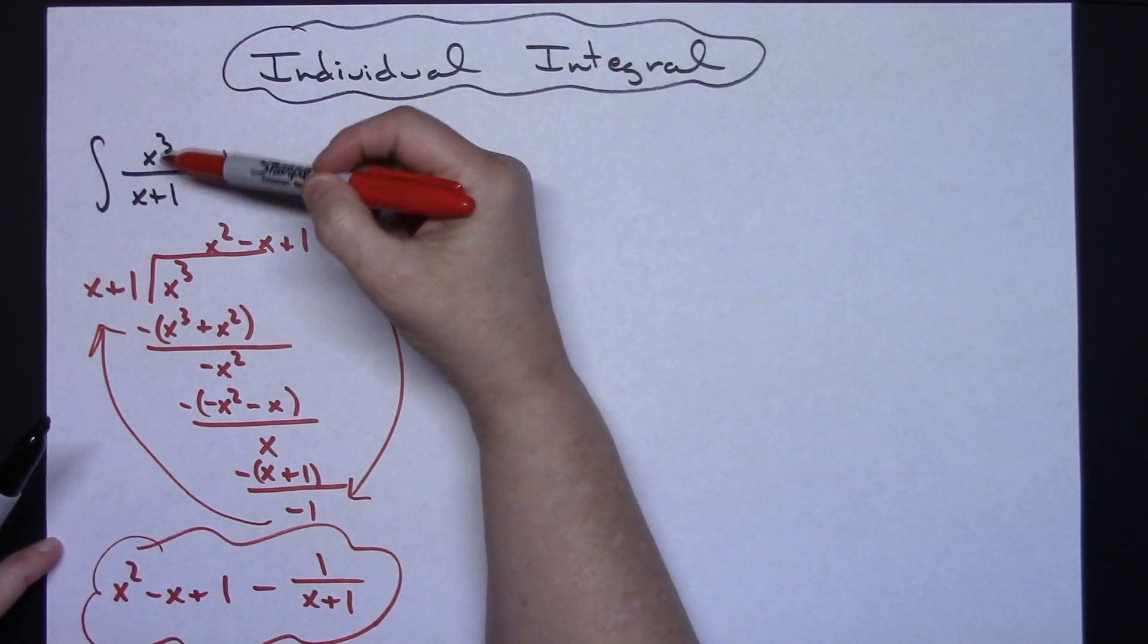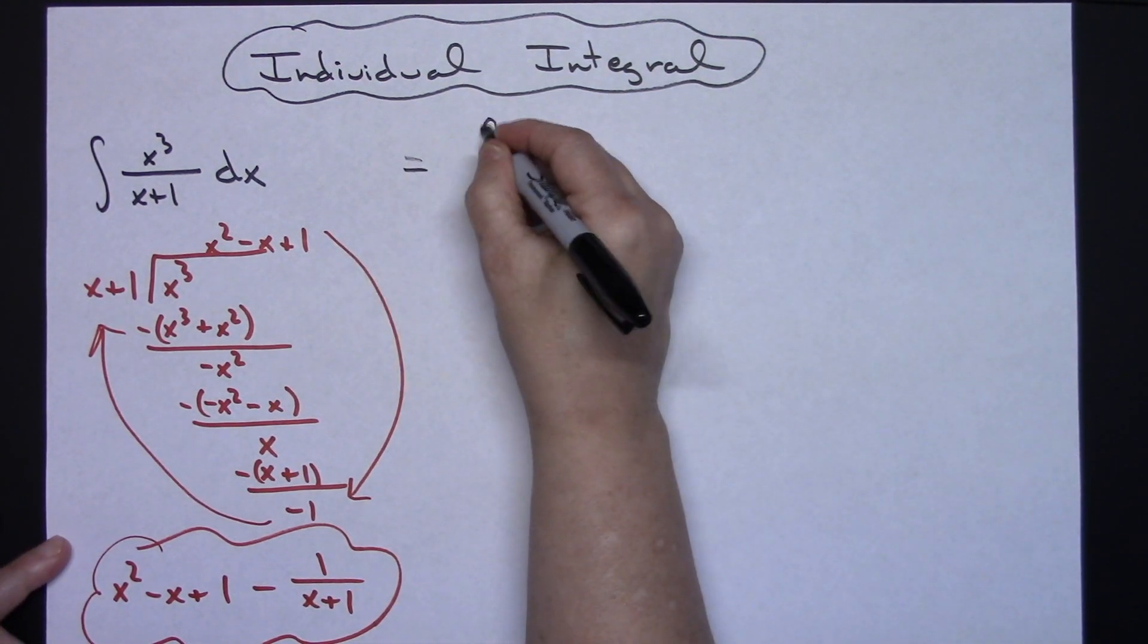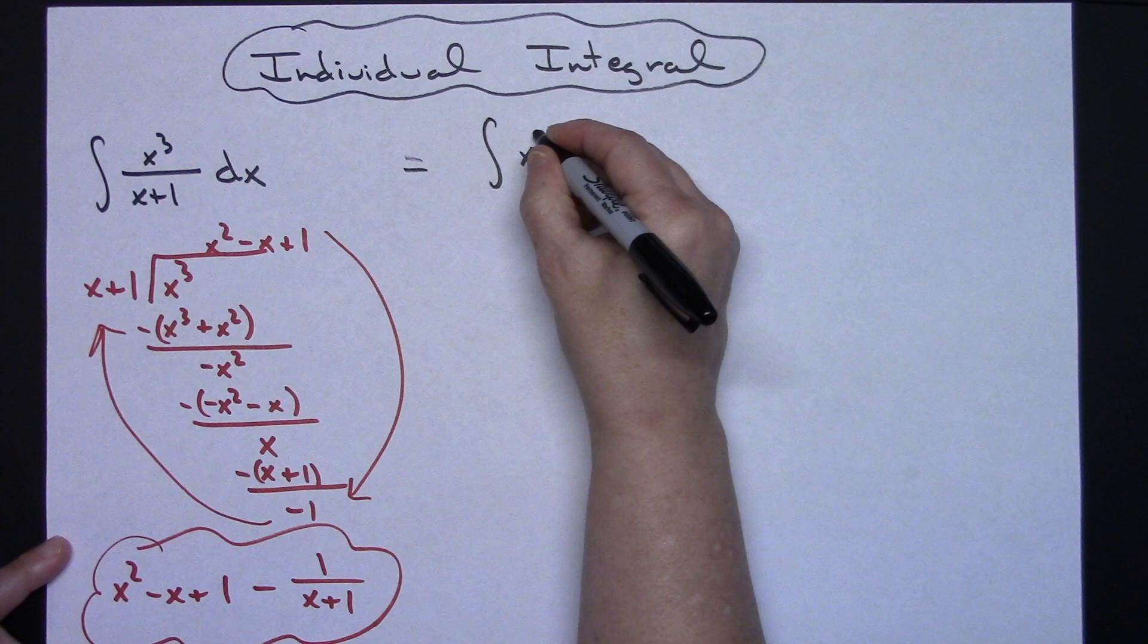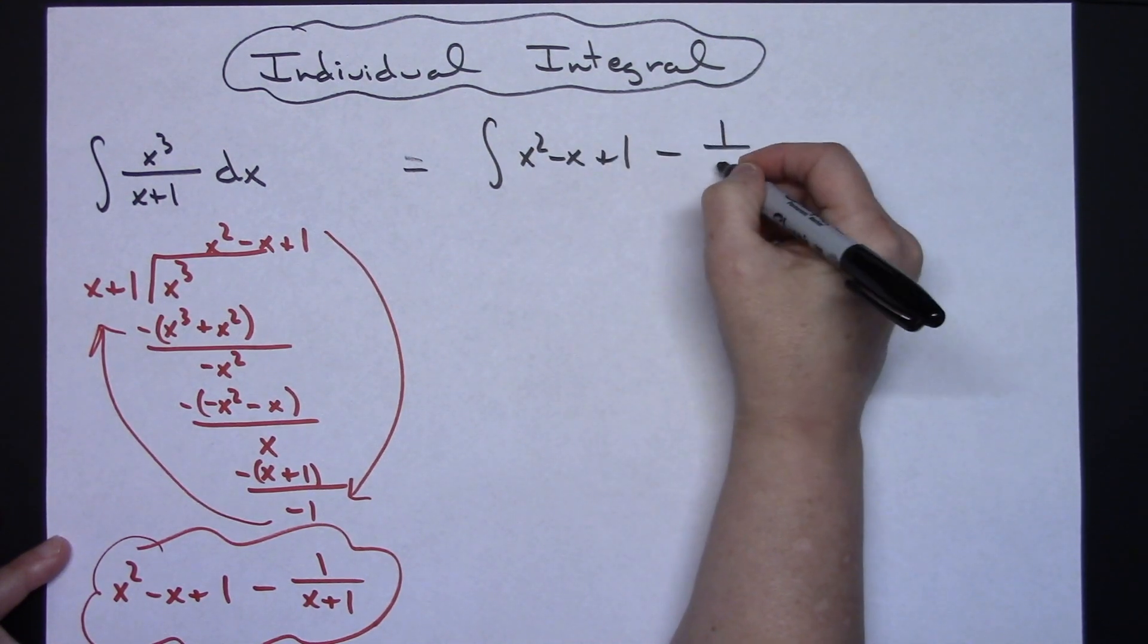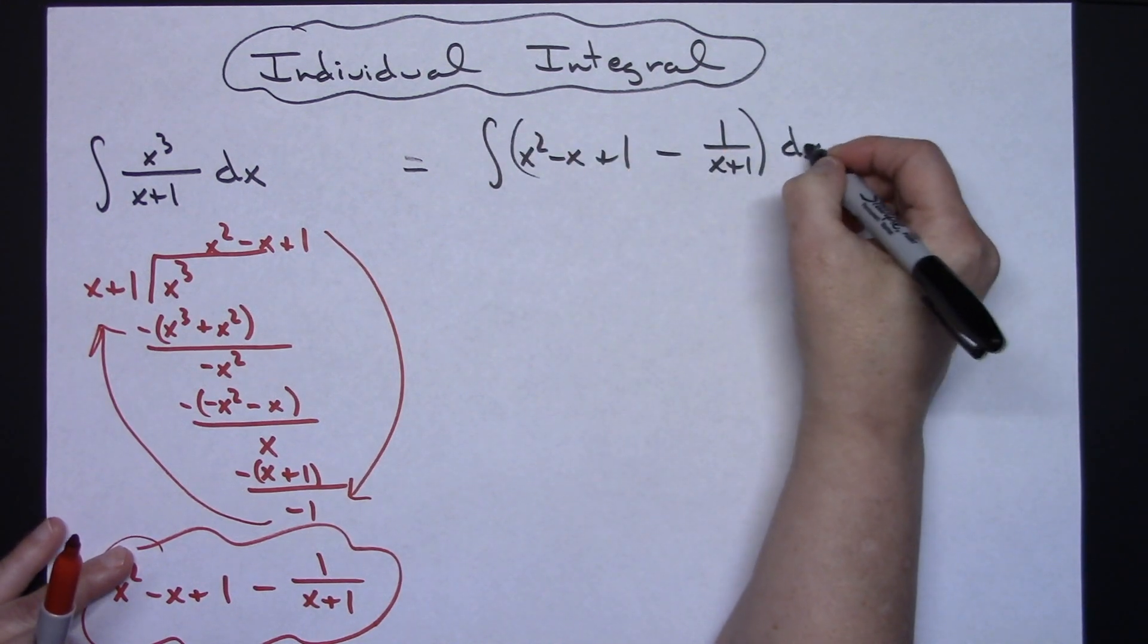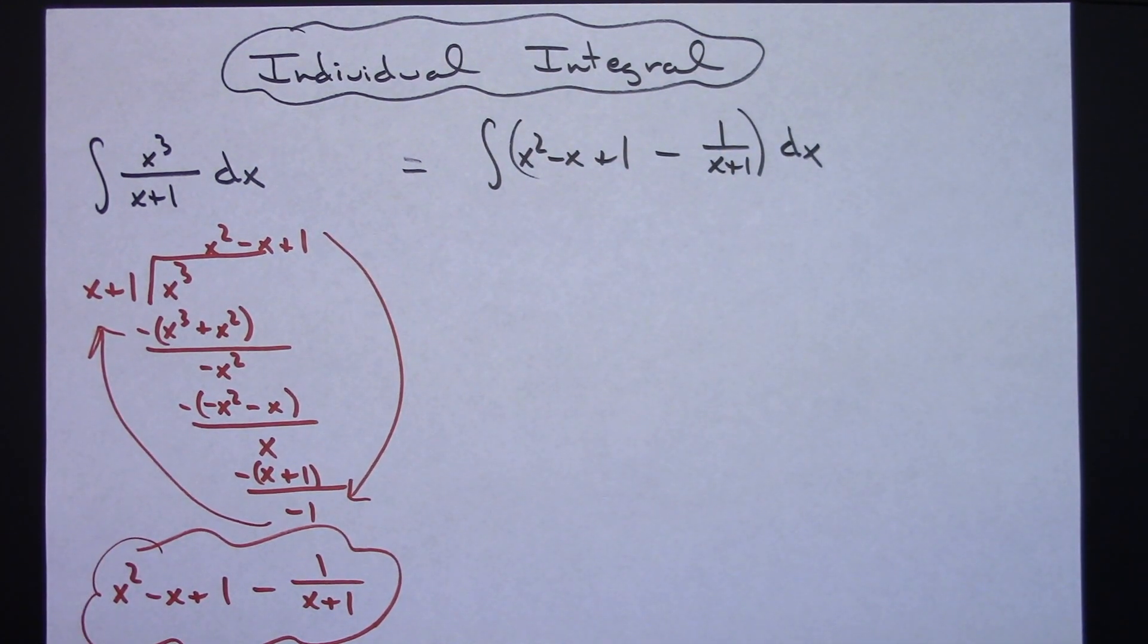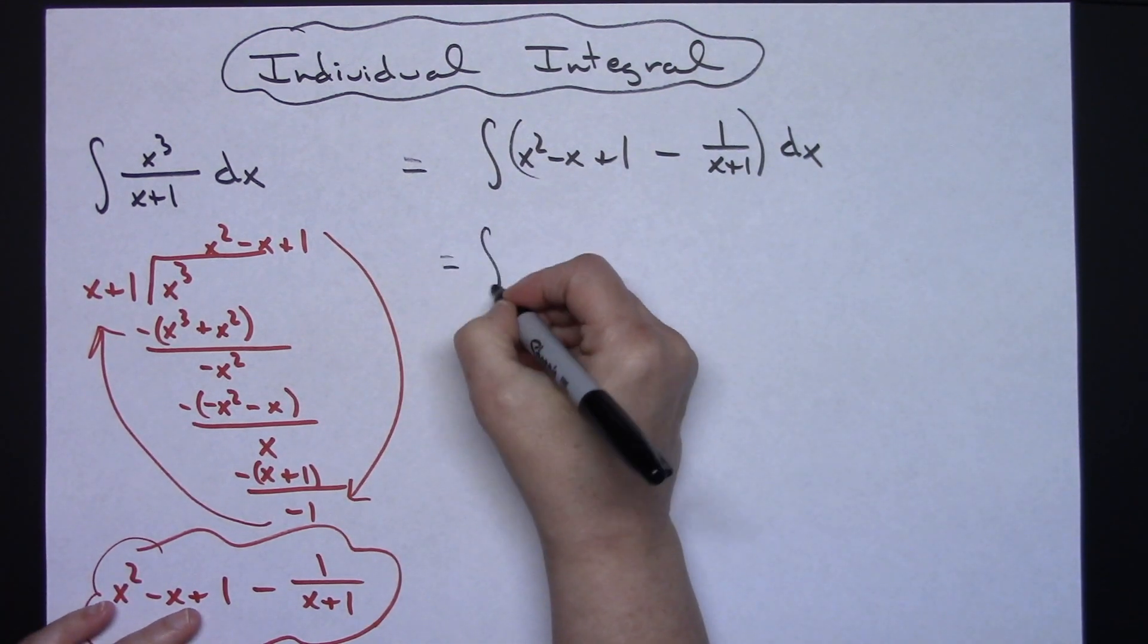I can rewrite that integral as the integral of X²-X+1 minus 1/(X+1), with a dx. If I write this as two individual integrals, it's going to integrate really simply.